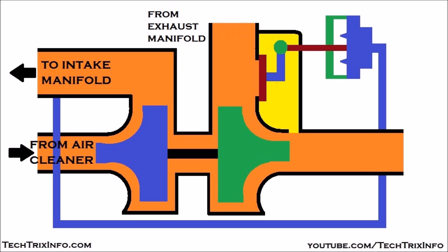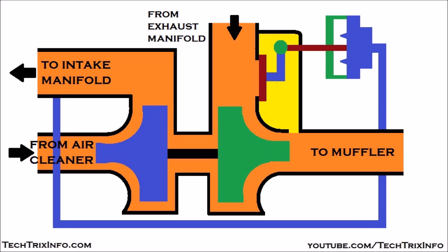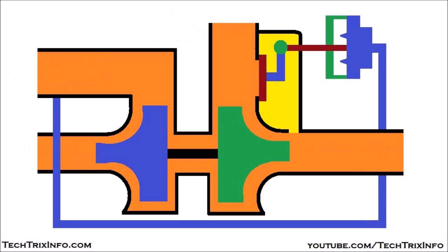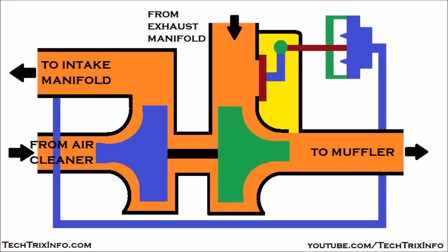This is the port from the exhaust manifold — the engine exhaust moves towards the turbine through this port. And this port leads from the turbine to the muffler. The air which hits the turbine passes to the muffler and then moves back to the atmosphere through this port.